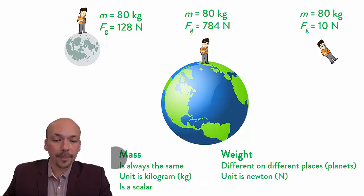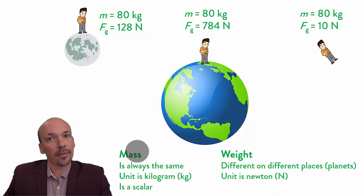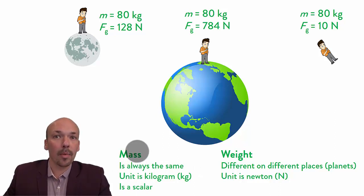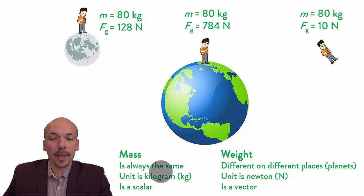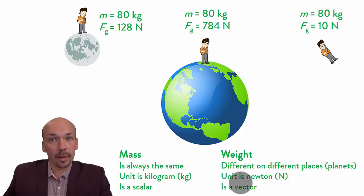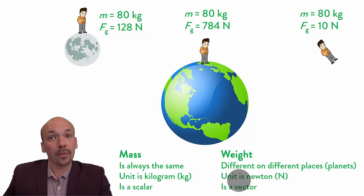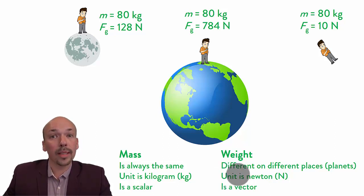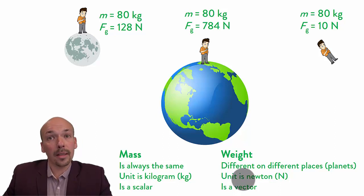Finally, mass is a scalar — it means that mass does not have a direction. You cannot say that we have a mass going left or going right. Weight is a vector, so weight does have a direction. You can have a weight force going left or force going right. I will go more in depth with this in another video.